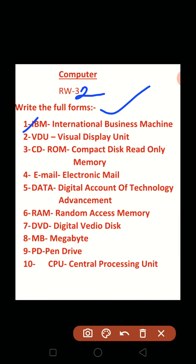Revision 2: write the full forms. First: IBM — IBM's full form is International Business Machine. Second: VDU — Visual Display Unit. Third: CD-ROM — Compact Disk Read Only Memory.